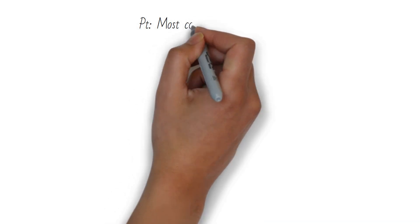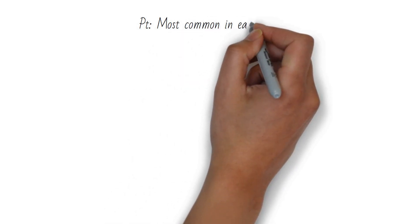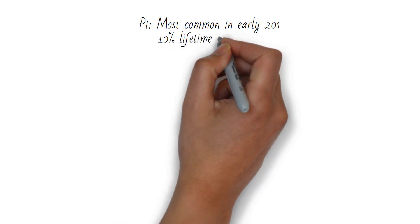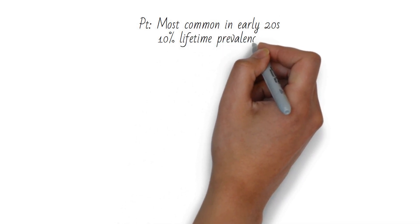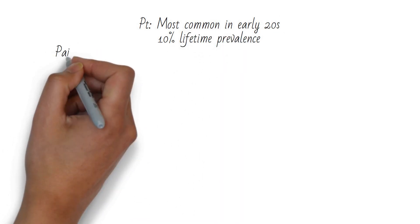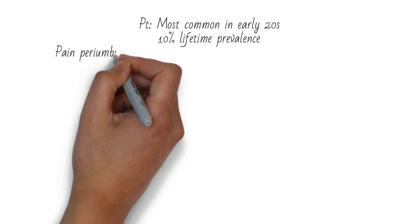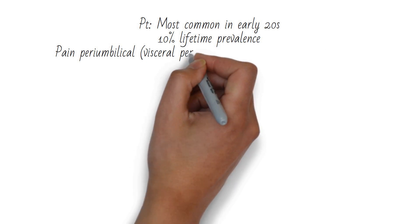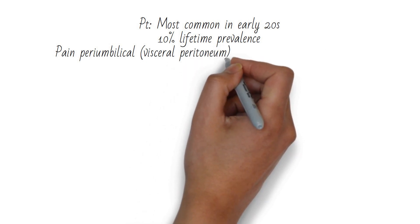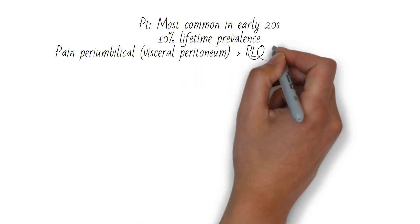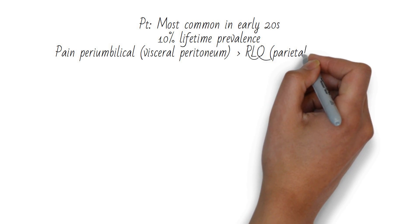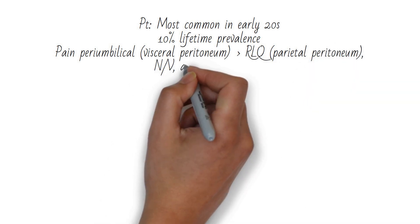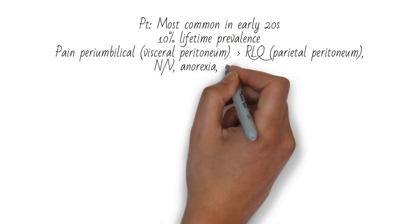Most commonly, the patient will be in their early twenties, although there is a 10% lifetime chance that appendicitis will develop. Pain will start diffusely, or in the peri-umbilical region, as the visceral peritoneum is irritated, and then it will localize in the right lower quadrant as the somatically innervated parietal peritoneum becomes irritated. The patient will likely also have nausea, vomiting, anorexia, and fever.